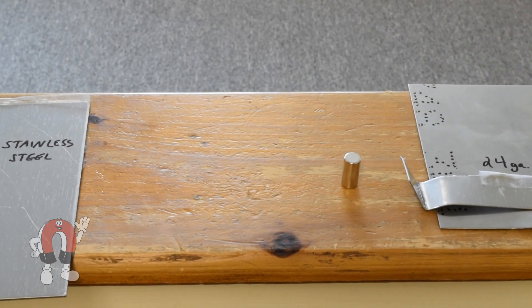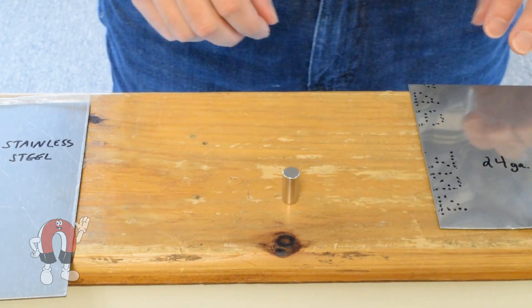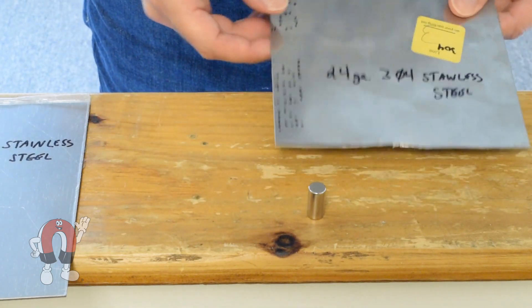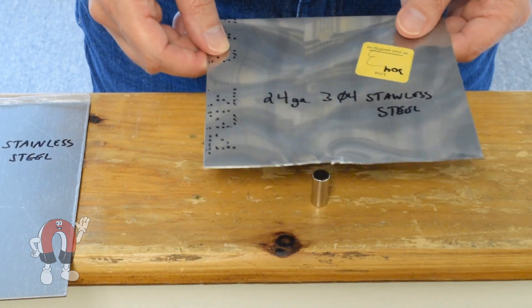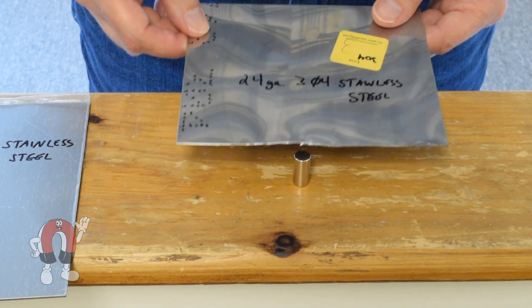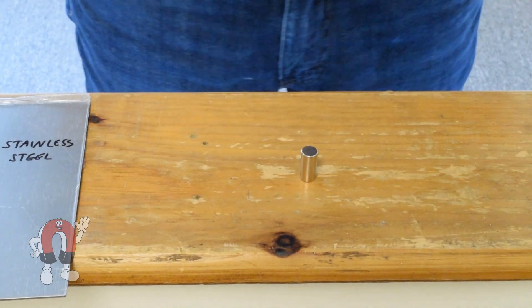So, do magnets stick to stainless steel? Yes, if you use the right kind. Regular steel might provide a little more pull force, but ferritic stainless steels can perform nearly as well. 430 stainless steel is a great choice if you need something magnetic, but with better corrosion protection. Just be wary about the kinds of stainless that are not magnetic at all.